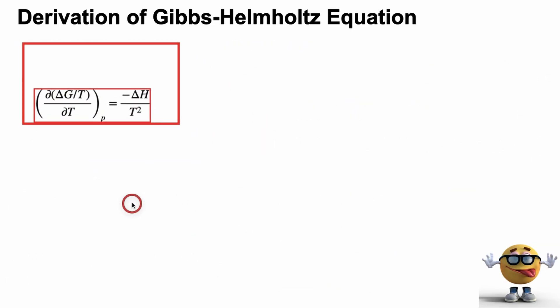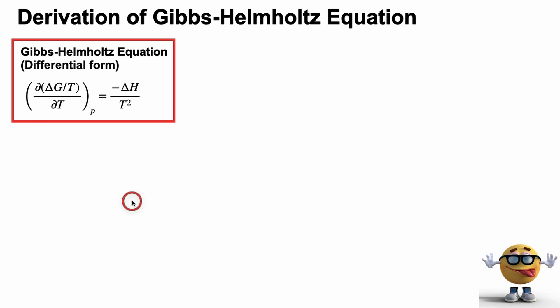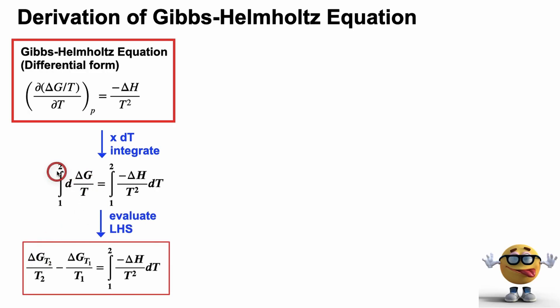Now this form is the differential form. It's not the most useful form that you'll need for exams. So we're going to manipulate a little bit to get the integral form. So we're going to multiply both sides by dT, and integrate. So if we do that, integrate. Now this is like dx, right? And the integral of dx is just x. So the integral of d of this fraction is the fraction from state 2 and state 1. And then we're leaving this right-hand side.